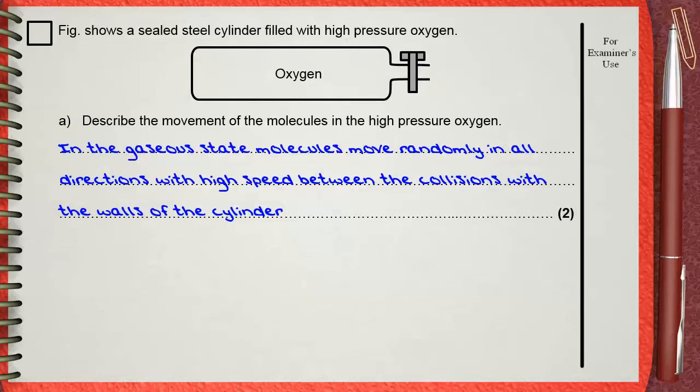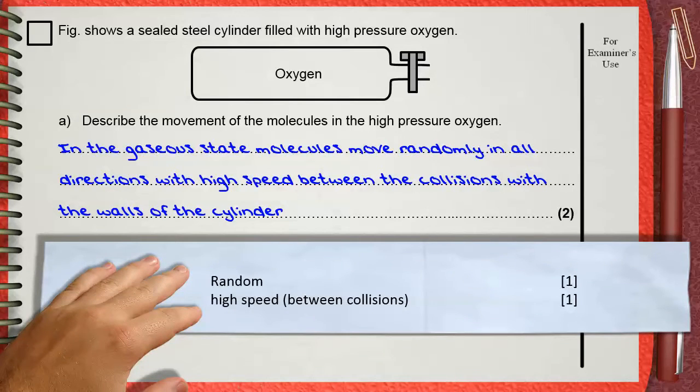The two marks given by the mark scheme are one mark for the word random and the second mark is for mentioning the high speed of the molecules between the collisions.